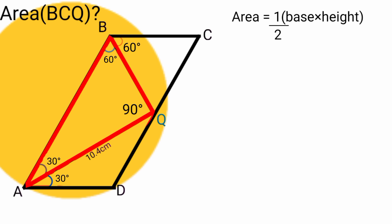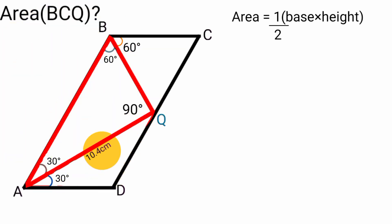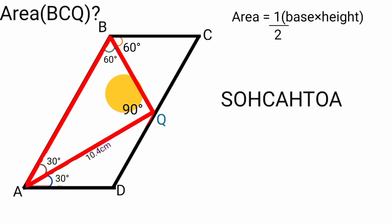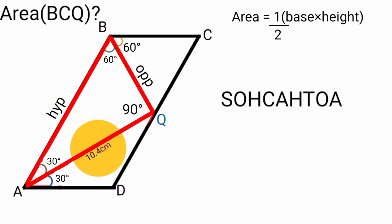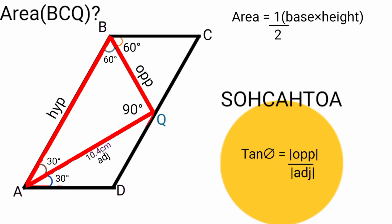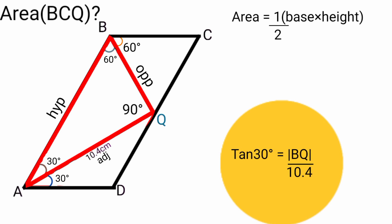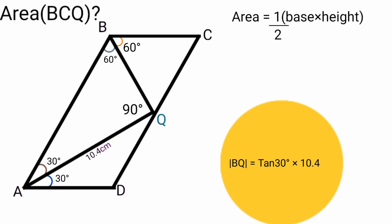Since triangle ABQ is a right angle triangle and we know the side lengths and angles, we can use SOHCAHTOA. The side opposite the right angle is the hypotenuse, and from the 30-degree angle, line BQ is the opposite side and 10.4 centimeters is the adjacent. Using sine: sin(30°) equals BQ over 10.4, so BQ equals sin(30°) times 10.4.